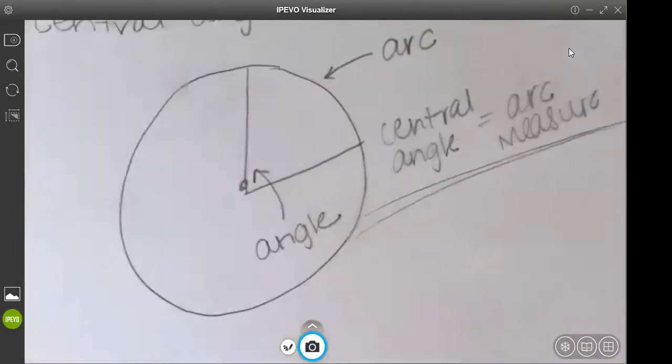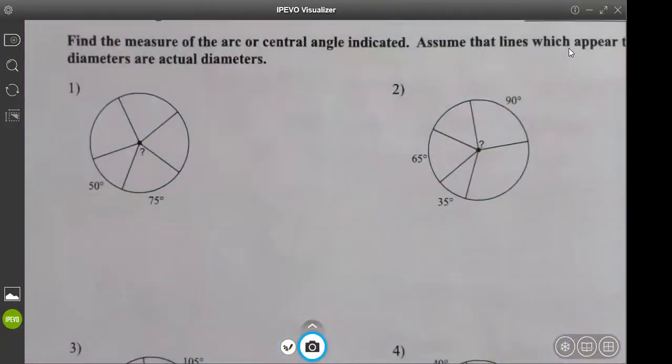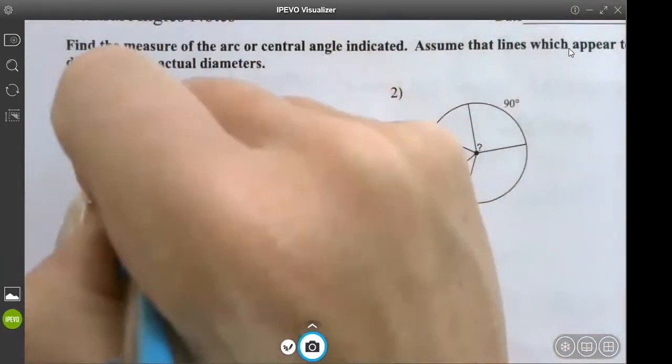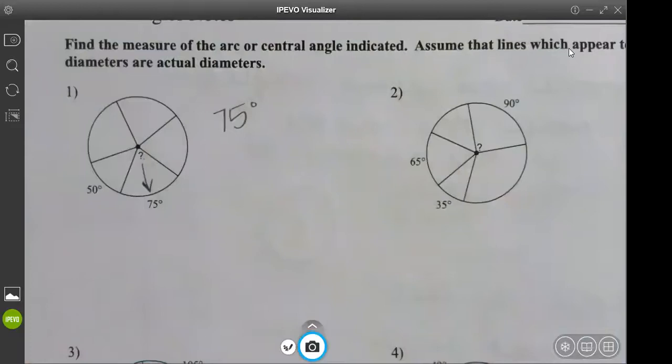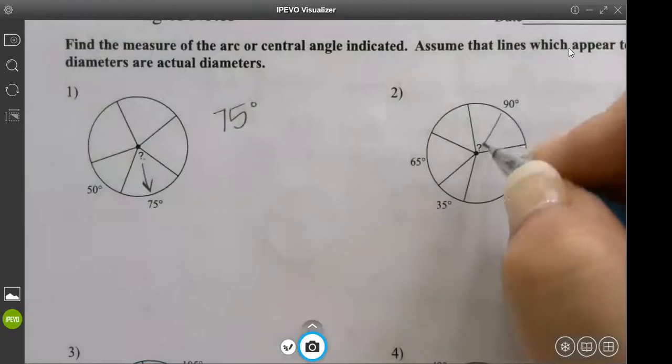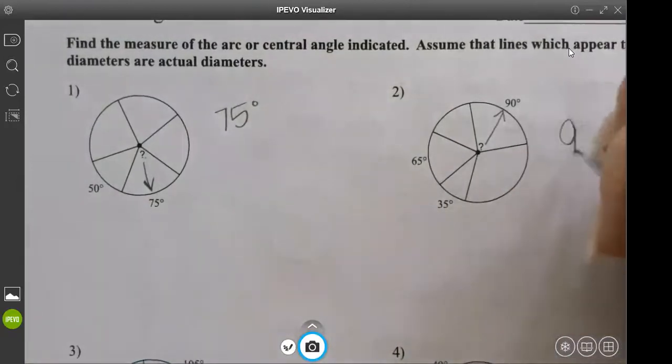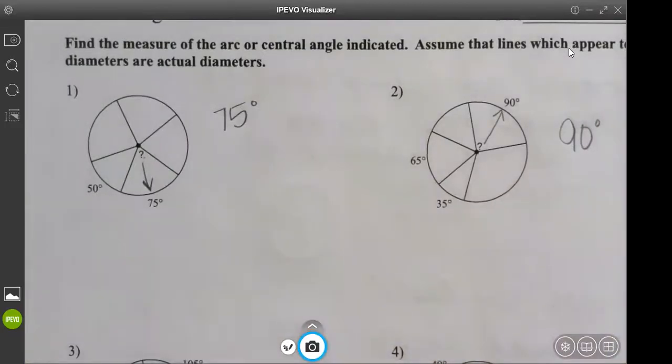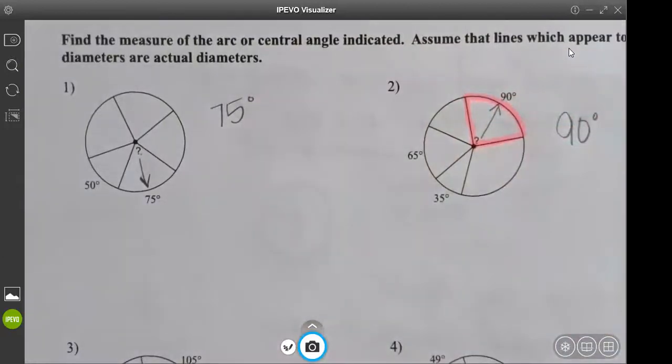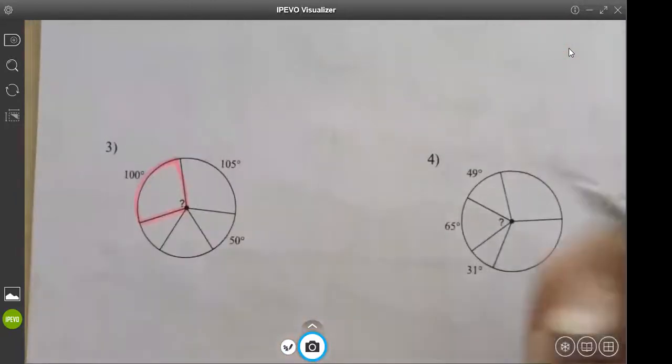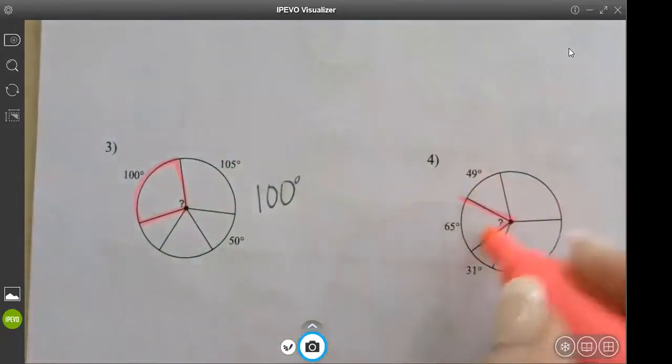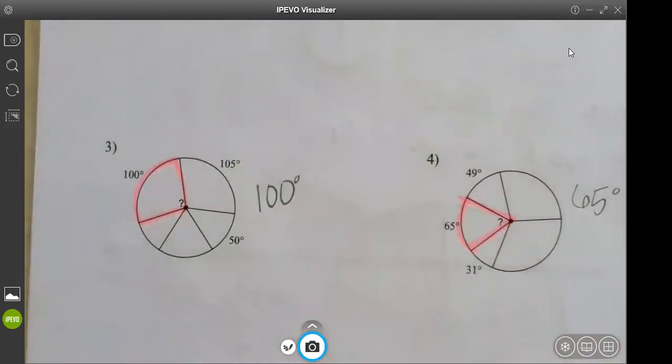We're trying to find this angle. It equals the arc. So it's just going to be 75 degrees. Yes, it is that simple. I told you today it was going to be easy. The next one, what's your arc measure? 90 degrees. That's it. So it's whatever your arc is that makes up that angle.